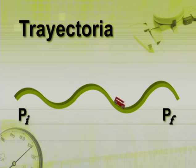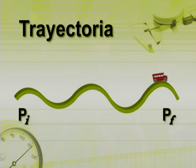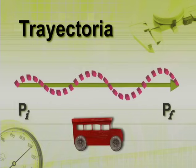La trayectoria es el conjunto de posiciones distintas que ocupa sucesivamente un cuerpo en movimiento, y se considera desde el punto de inicio hasta el punto final del viaje. En la línea punteada podemos observar que la longitud de la trayectoria es mayor que el desplazamiento.